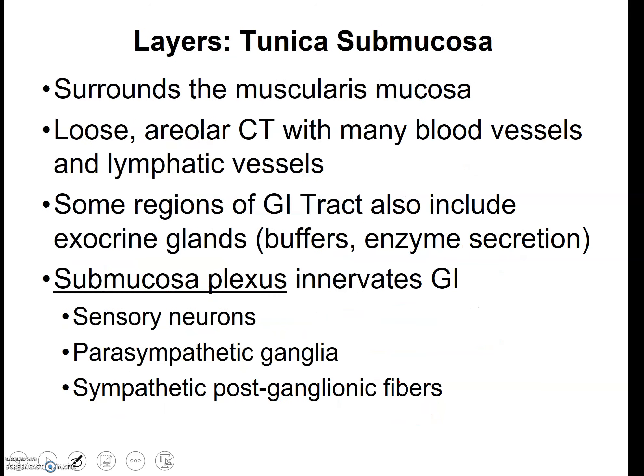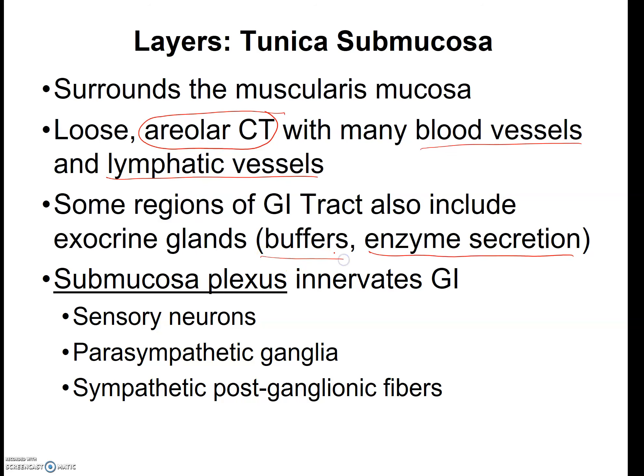The tunica submucosa surrounds the muscularis and is made of connective tissue holding everything together. It holds blood vessels and lymphatic vessels in place. Areolar connective tissue in the digestive tract holds the blood vessels, lymphatic vessels, and nerves in place so they don't move around too much as peristalsis occurs. Some layers contain enzymes or cells that make enzymes and cells that make buffers — that will be covered more in physiology.